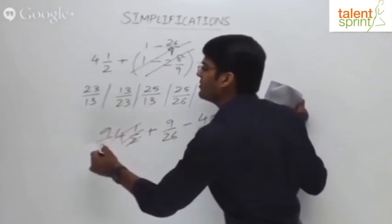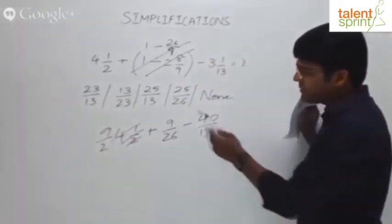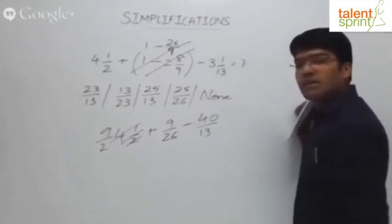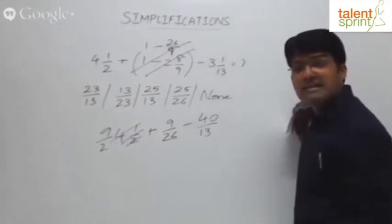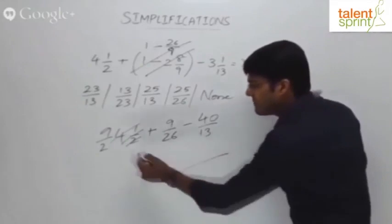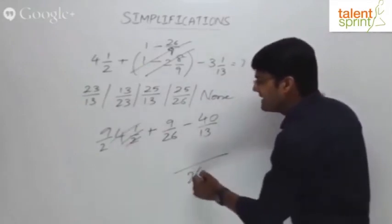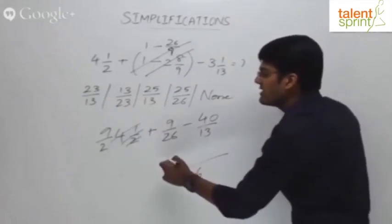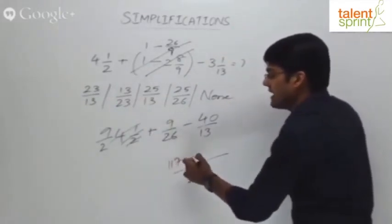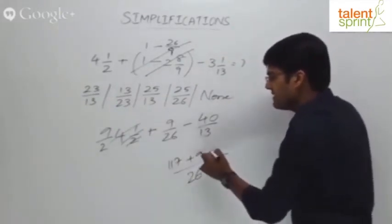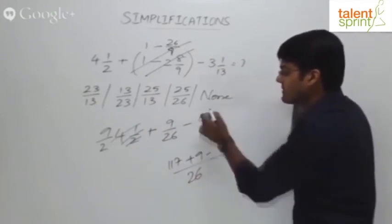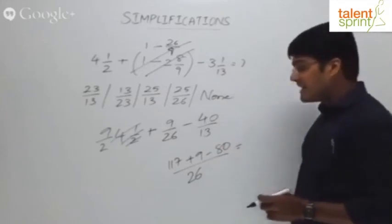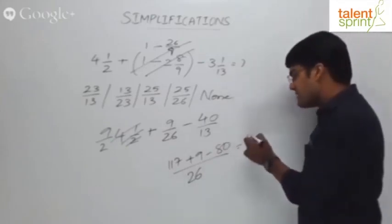Now try to look at this: 9/2 plus 9/26 minus 40/13. You have to take the LCM. What is the LCM here? 26 is the LCM. 2 goes how many times? 13 times. 13 into 9 is 117. 26 goes 1 time, so directly we have 9. 13 goes how many times? 2 times. 2 into 40 is 80. So 117 plus 9 is 126, 126 minus 80 is 46.